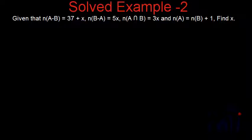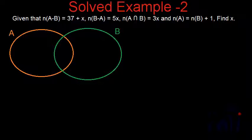First we have to find the cardinal number of A and the cardinal number of B, and then we have to find the value of x. To understand the problem better, I am going to draw a Venn diagram. This is the Venn diagram where we have two sets, set A and set B. I have not drawn the universal set because that is not required here — everything given to us is in terms of set A and set B.